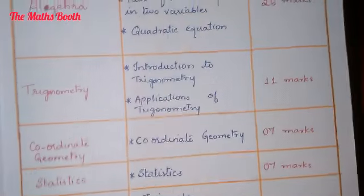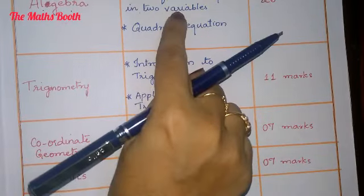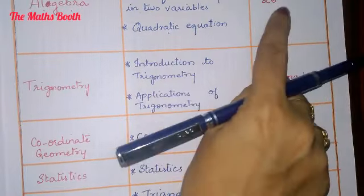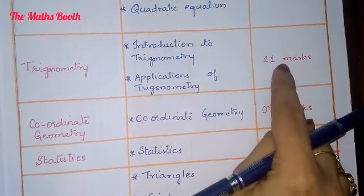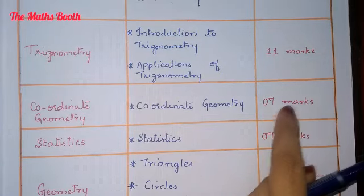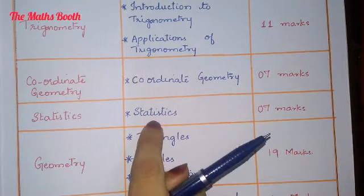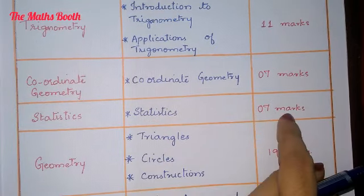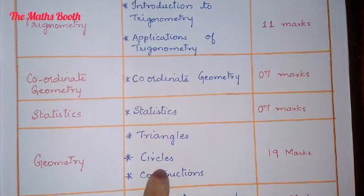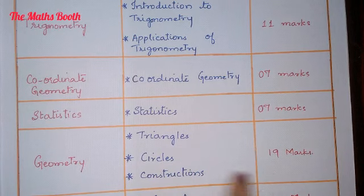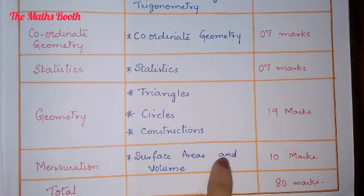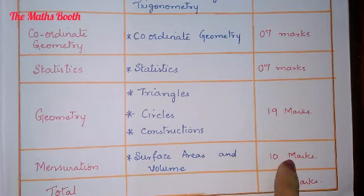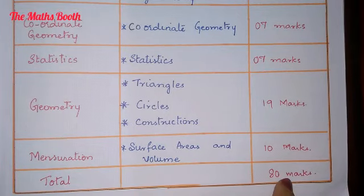To summarize: AP, Pair of Linear Equations, and Quadratic Equations — 26 marks. Trigonometry both chapters — 11 marks. Coordinate Geometry — 7 marks. Statistics — 7 marks. Similar Triangles, Circles and Construction — 19 marks. Surface Area and Volume — 10 marks. Total: 80 marks.